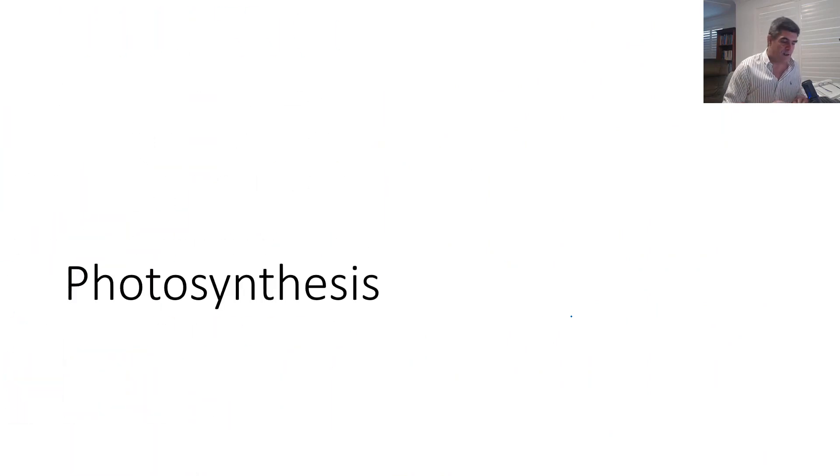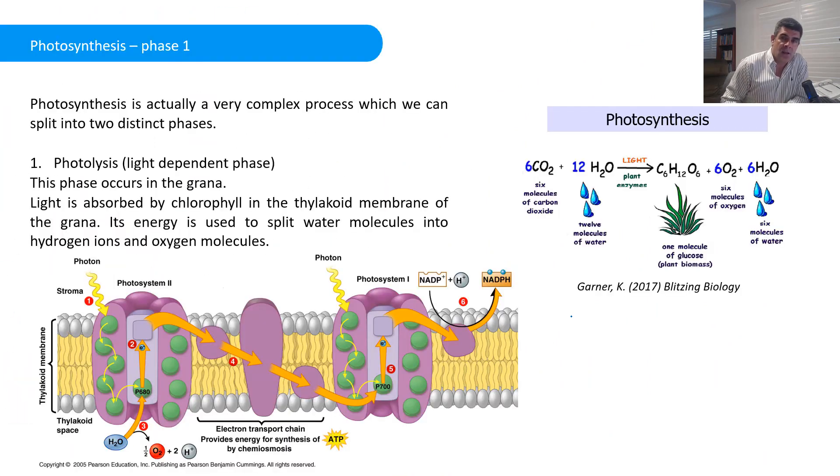So firstly, photosynthesis. Photosynthesis is carried out in two distinct phases. Again, there are more steps involved here than we're going to deal with, but we're going to at least try and look at the two key phases of photosynthesis and what's actually going on in each one.